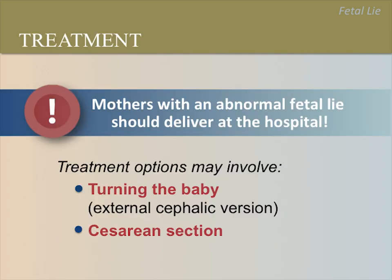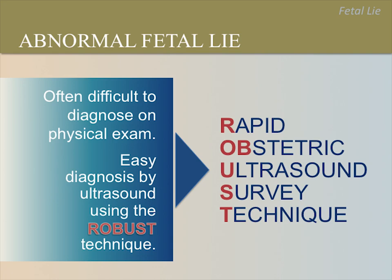Always refer mothers with an abnormal fetal lie or presentation at 36 weeks or later to deliver at a hospital. Mothers need to be at a facility that can safely attempt to turn the baby — called aversion — or perform a cesarean section in case of obstructed labor. Many cases of an abnormal fetal lie or presentation are not found before delivery because it can be difficult to diagnose during a regular clinical exam. As a result, many mothers with an abnormal fetal lie or presentation deliver at a facility that cannot perform a cesarean section if needed.